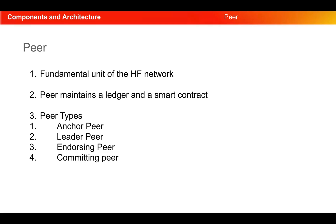In this section, let us look into what a peer is. A peer is a fundamental unit of a Hyperledger Fabric network. A peer maintains a ledger and a smart contract. Peers are the fundamental element of the network because they host instances of the ledger and instances of the chaincode. Each peer can have multiple chaincodes and multiple ledgers. Peers also have special chaincodes that are always present by default.